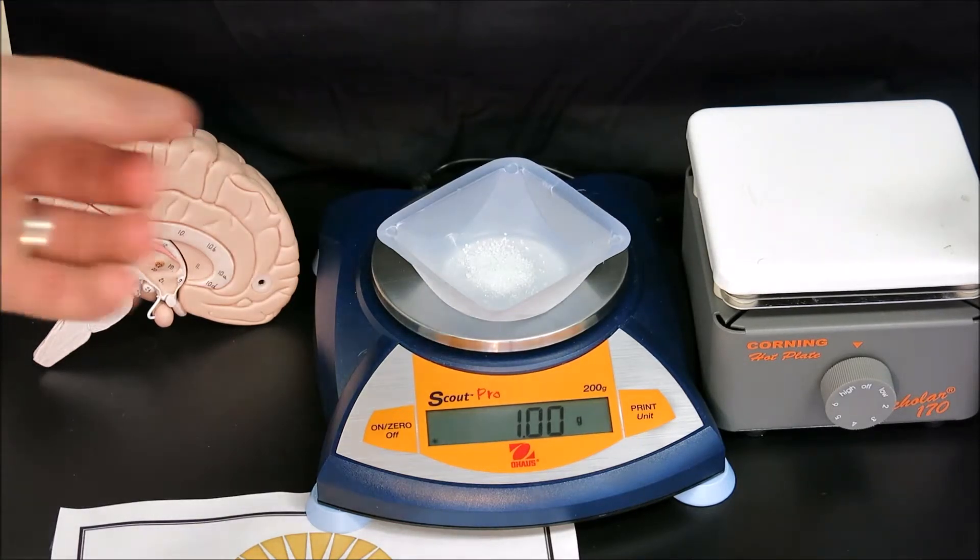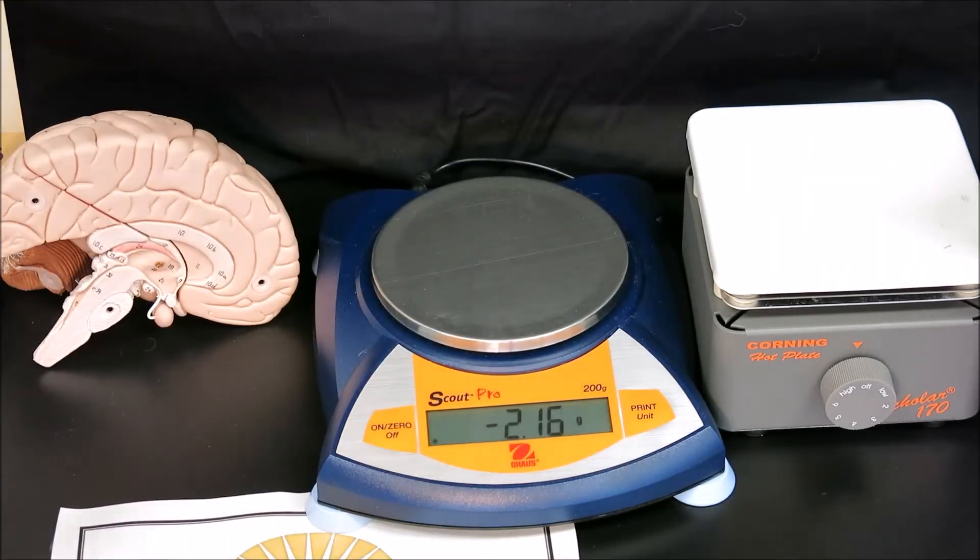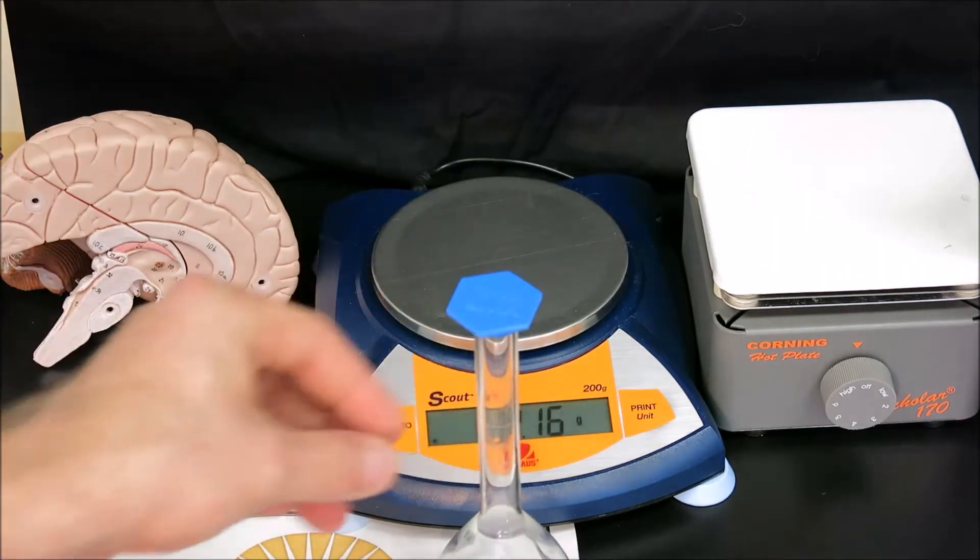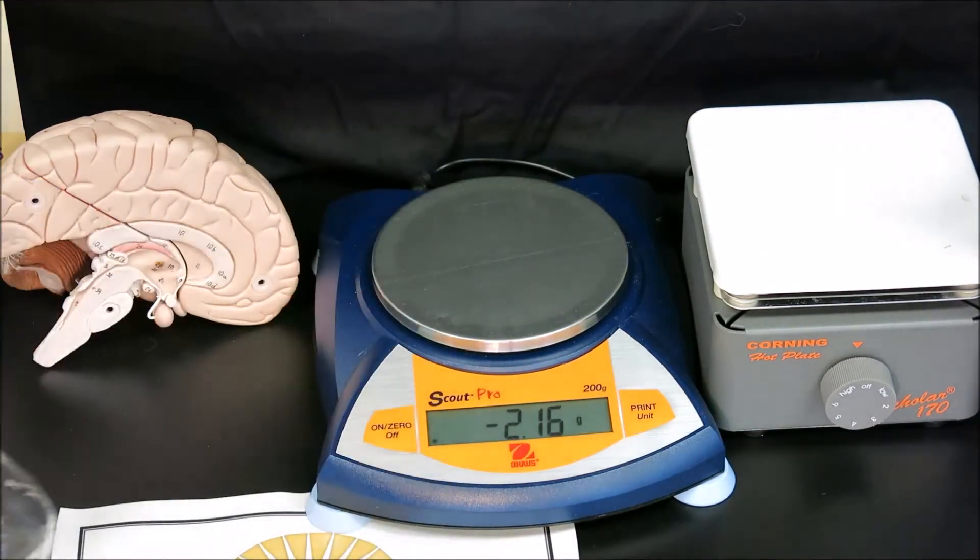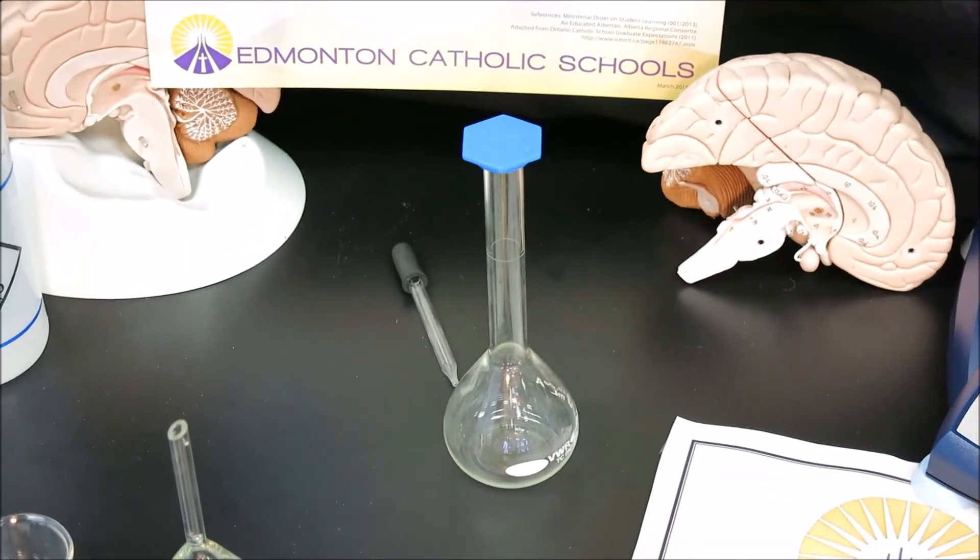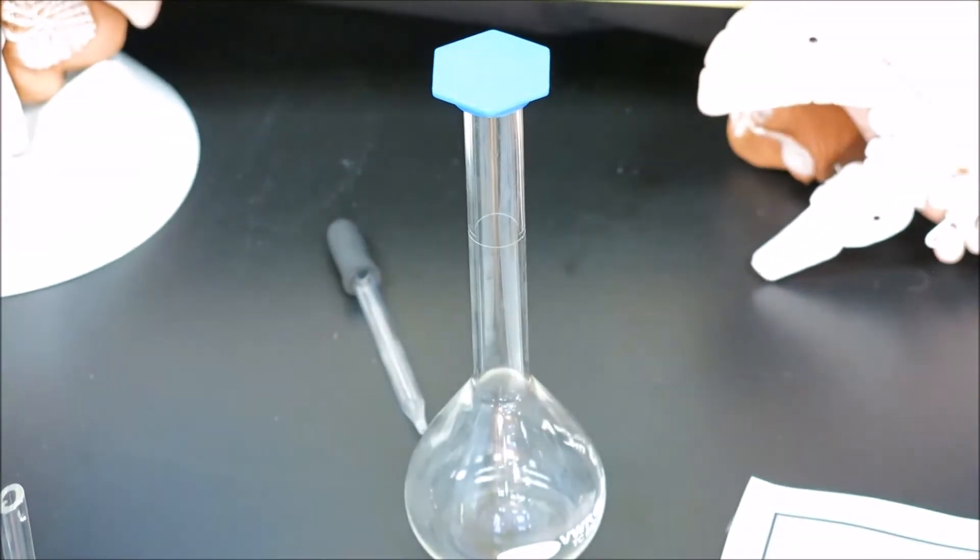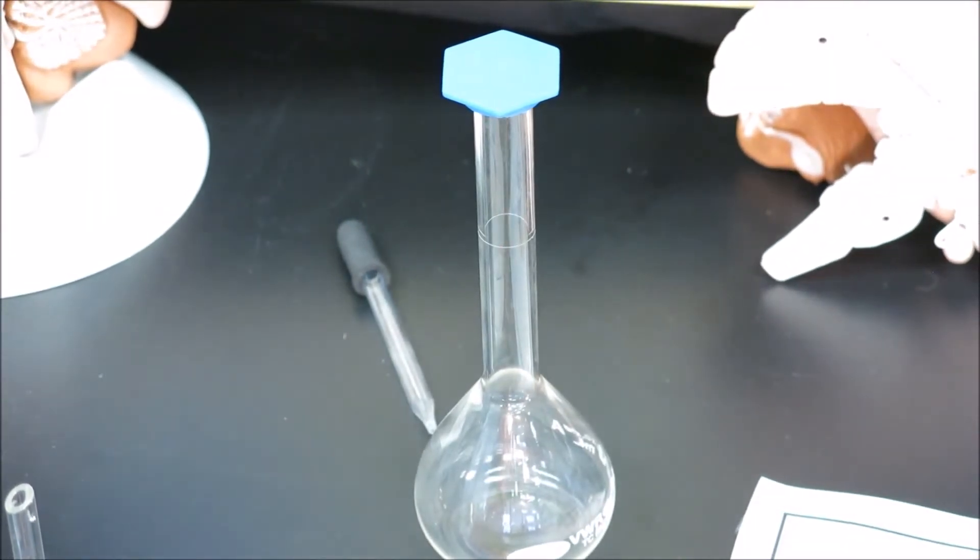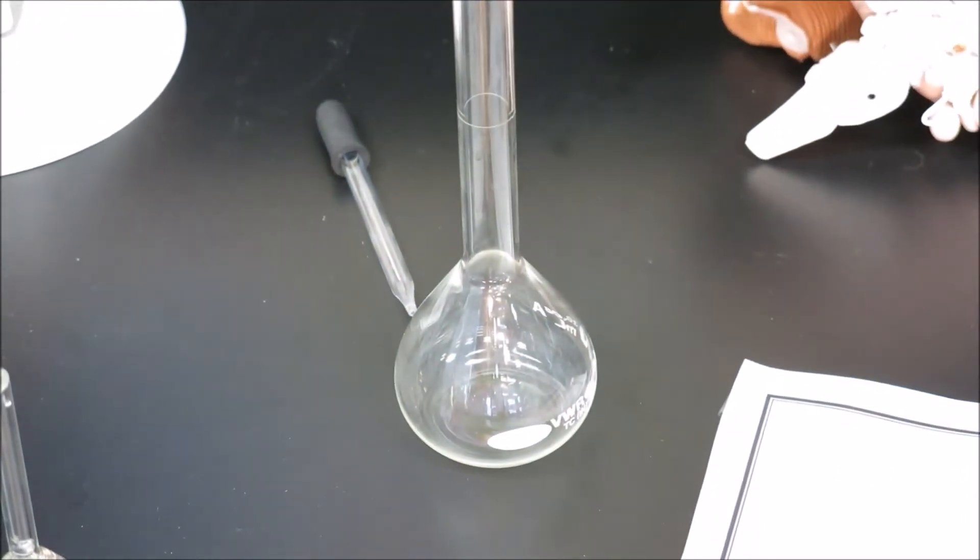In order to prepare the solution, I cannot pour the solid into the neck of the volumetric flask. The flask's neck is far too narrow, and the solid could get stuck inside, not allowing it to dissolve properly. Instead, we will mix the solid into a small beaker and transfer that mixture into the volumetric flask, at which point we will fill up the flask to the volume we need.